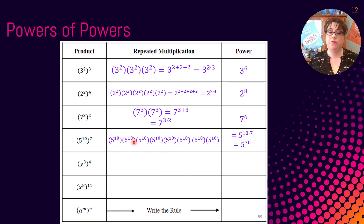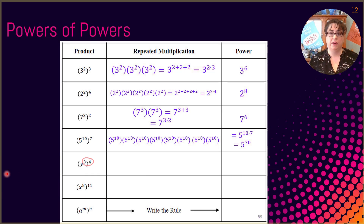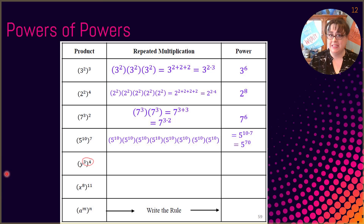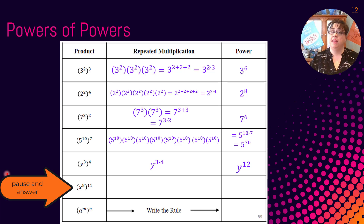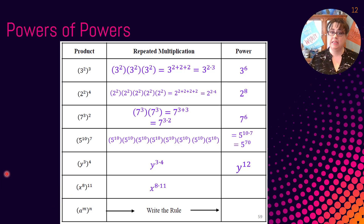So we are well on our way to developing this nice rule. Instead of writing these all out, let's just use the rule. For example, y to the 3rd to the 4th power — numbers next to parentheses mean multiply — so my answer is y to the 3 times 4, which is y to the 12th. Go ahead and try x to the 8th to the 11th power. You should have gotten x to the 8th times 11, which is x to the 88th.